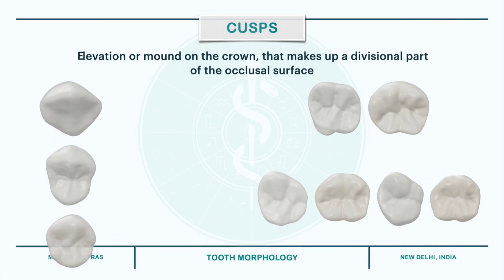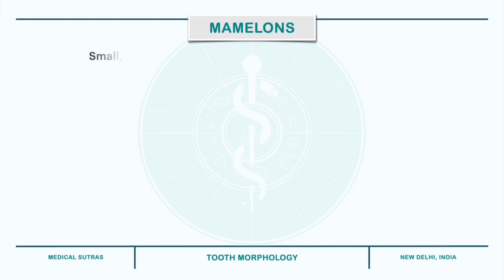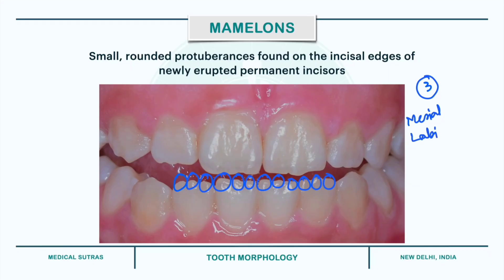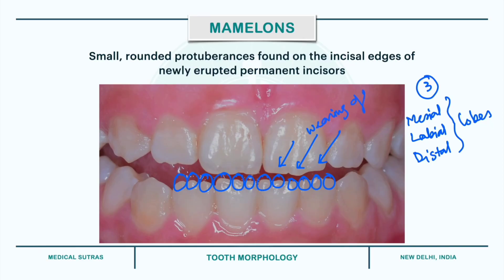Next are the mamelons. These are small rounded protuberances found on the incisal edges of newly erupted permanent incisor teeth. As we can see in the photographs, all the incisors have mamelons. They are three in number and represent the mesial, labial and distal lobes. However, with time, as the teeth are used for mastication, the mamelons wear off and disappear. As we can see in the upper left central incisor, there is wearing off of the mamelons.